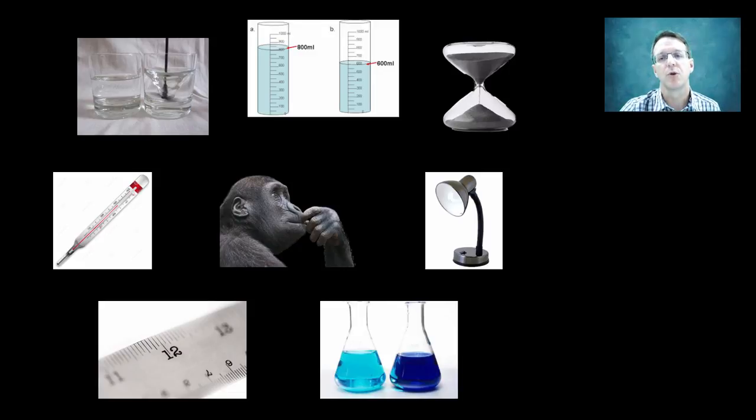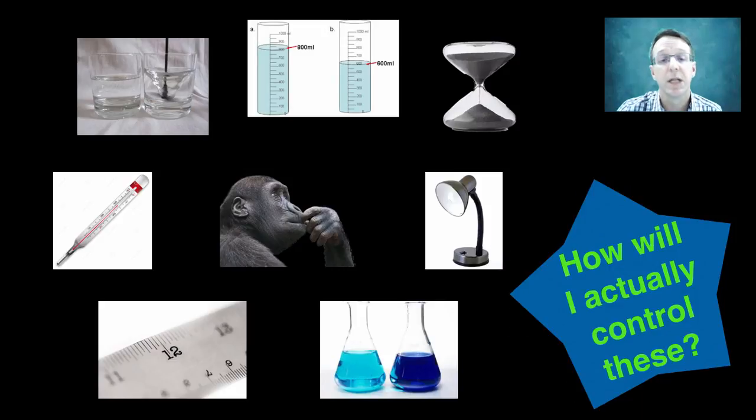Now, not all of these are going to apply, and of course there would be others given the unique nature of all experiments, but it's a good place to start. The second thing that you need to do is put a plan in place to actually control those variables, as it is little good to state in your procedure that you're going to actually control the temperature of the experiment and not bother actually outlining how you're going to do it.